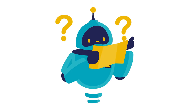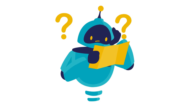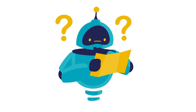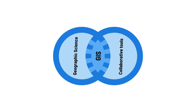Curious about how GIS works? GIS technologies seamlessly merge geographic science with collaborative tools. The essence lies in helping people achieve a shared objective, extracting actionable intelligence from a diverse range of data sources.